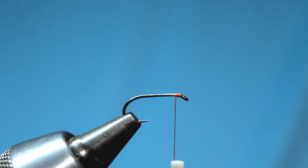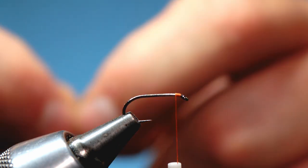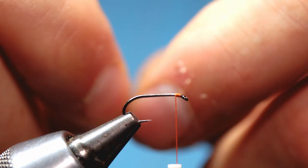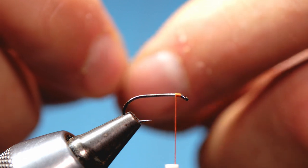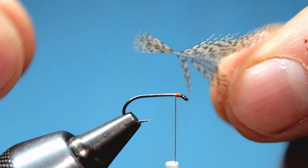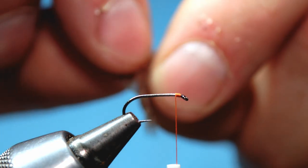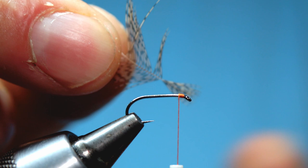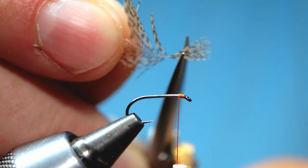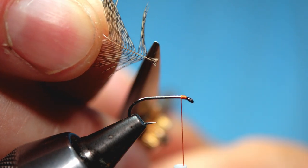For the hackle we're using the feather taken from the back of a grey partridge which gives you this nice speckled effect. To prepare the hackle we just brush back those hackle fibres exposing the tip and then take our scissors and just shorten that tip section a little bit so it's nice and manageable.